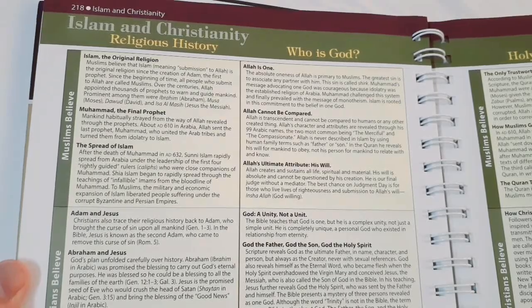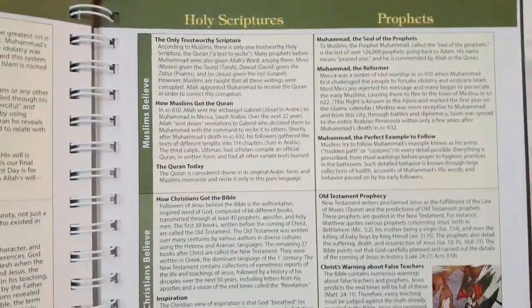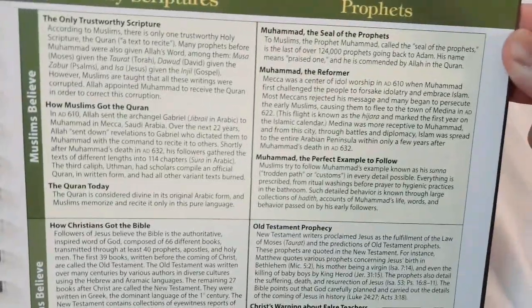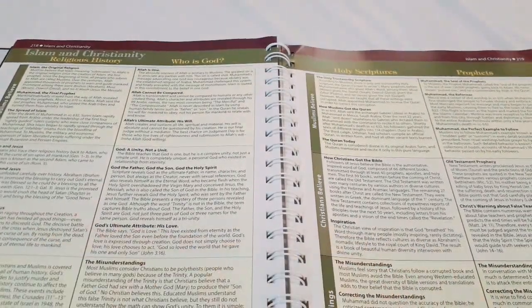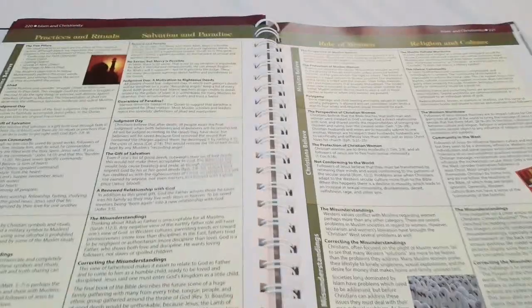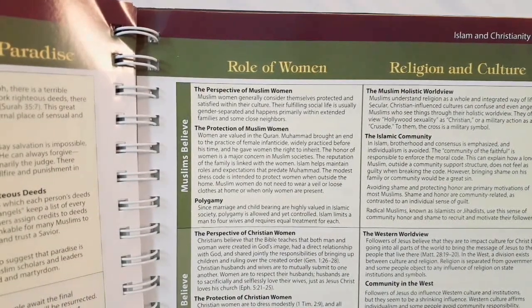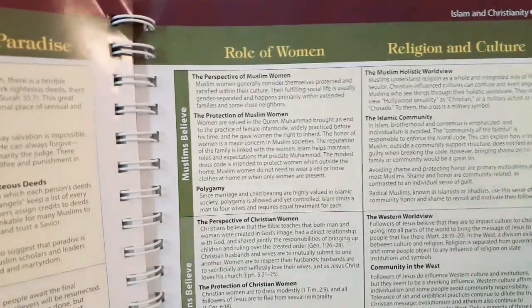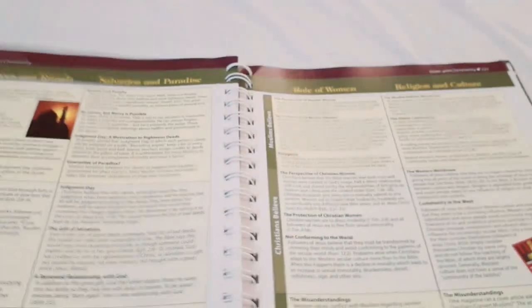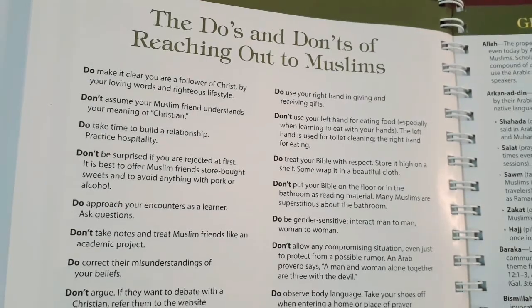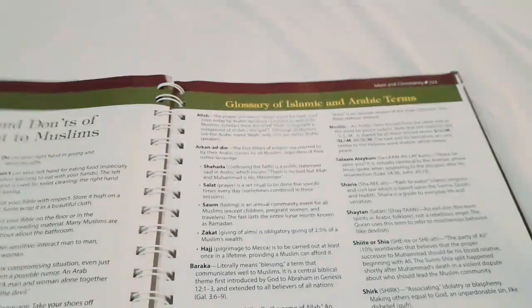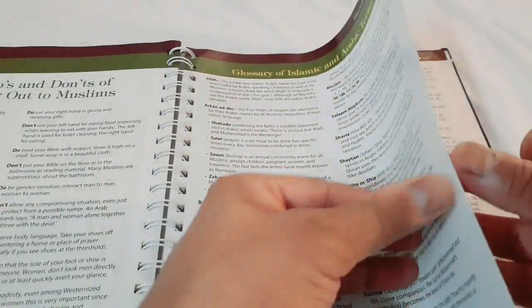There's a separate section comparing Islam and Christianity: religious history, who their God is, how they treat their holy writings, and their prophets. It goes into practices and rituals, salvation and paradise, the role of women in each religion, and relationship versus religion. It also covers how each affects culture and society, gives do's and don'ts for reaching out to Muslims, and provides a glossary of Islamic and Arabic terms.